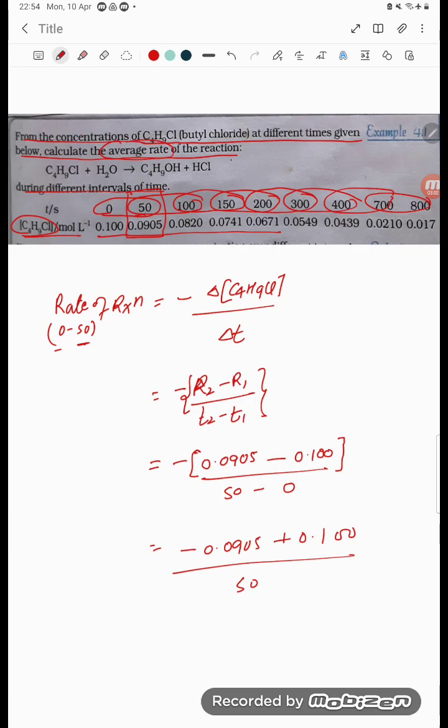After subtracting, what are you going to get? Let me subtract: 0.1 minus 0.0905 equals 0.0095. Upon 50, we divide by 50.